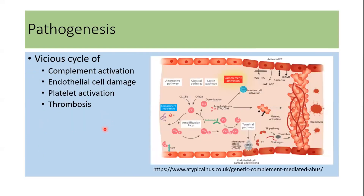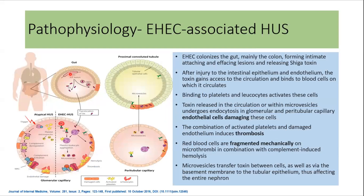The basic pathogenesis of hemolytic uremic syndrome involves a vicious cycle of complement activation, endothelial damage, platelet activation, and thrombus formation. In enterohemorrhagic E. coli-associated HUS, when there is infection in the gut, the Shiga toxin is released and, after injuring the intestinal epithelium, gains access into the circulation and binds to blood cells, activating platelets and leukocytes. The toxin, circulating within microvesicles, undergoes endocytosis in glomerular and peritubular capillary endothelial cells, leading to their damage. Activated platelets combined with endothelial cell damage result in thrombus formation.